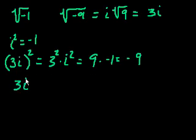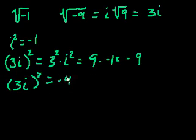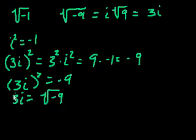So 3i squared is equal to negative 9. And if we are extending the definition of square roots to negative numbers, then we can go the other way around and say 3i is equal to the square root of negative 9. And 3i we can call an imaginary number.